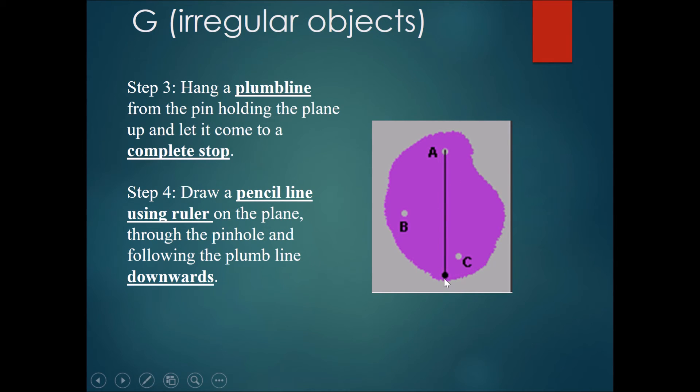This plumb line has a weight over here. Therefore, the weight will pull down and the center of gravity of the plumb line will be directly below the pivot, which is at A. Mimic how this object over here, this irregular object has swung itself and the center of gravity is also somewhere below A. Therefore, we can draw a pencil line using a ruler on the plane through the pinhole and we follow the plumb line downwards. Like this, we know that the center of gravity of this irregular object is actually somewhere along this line.